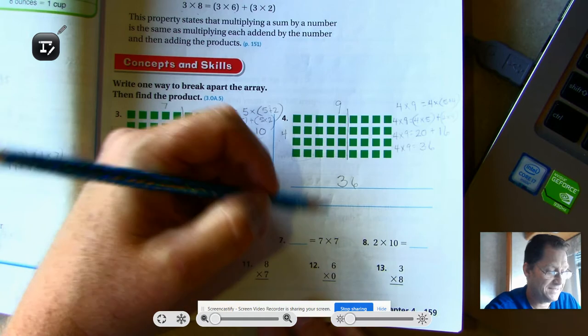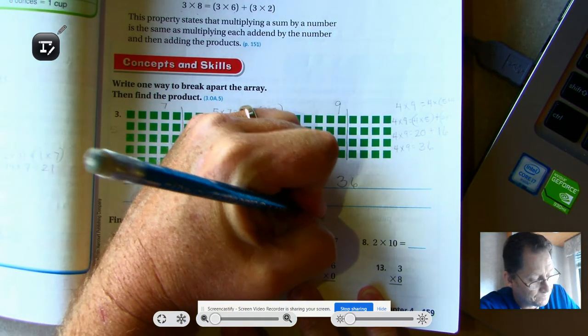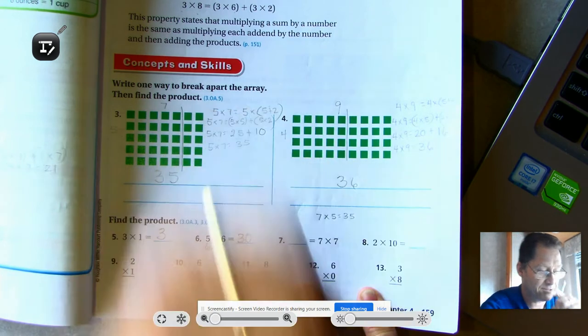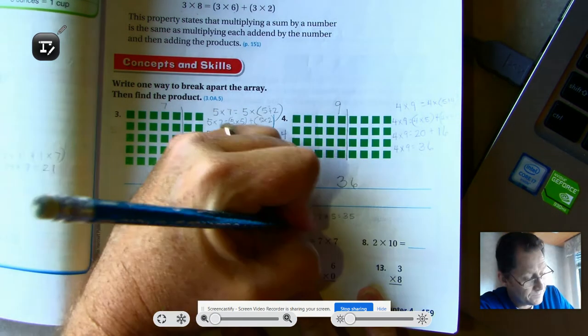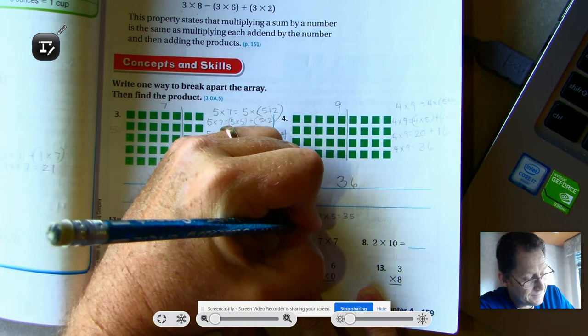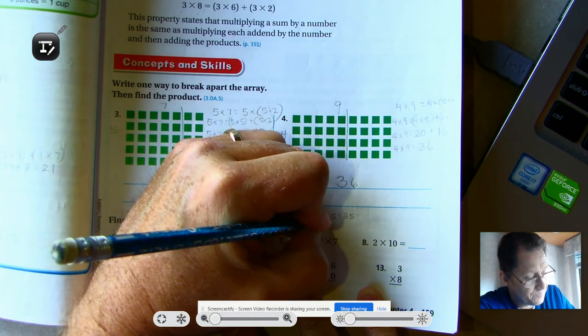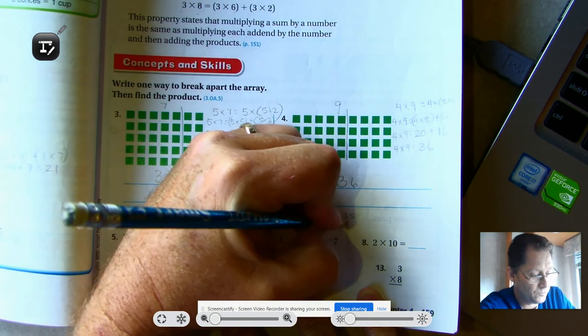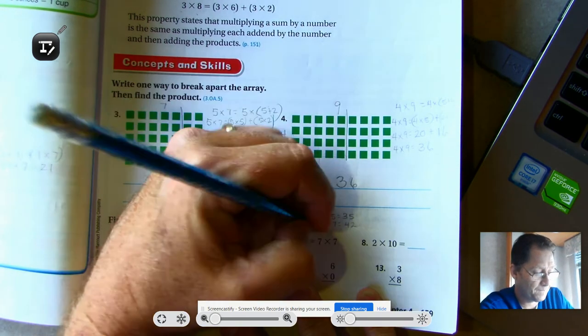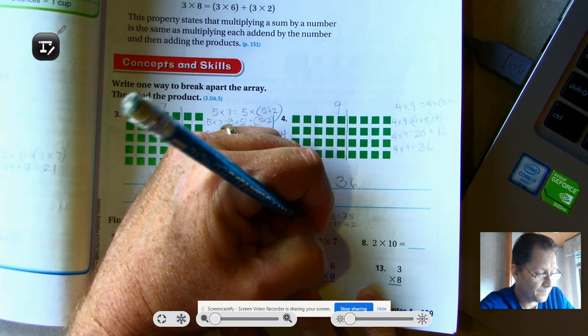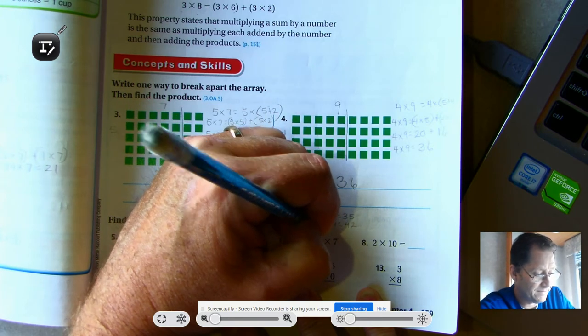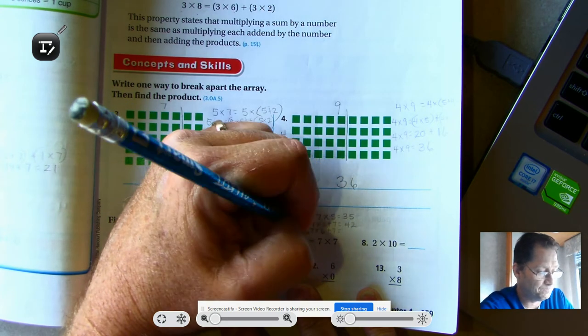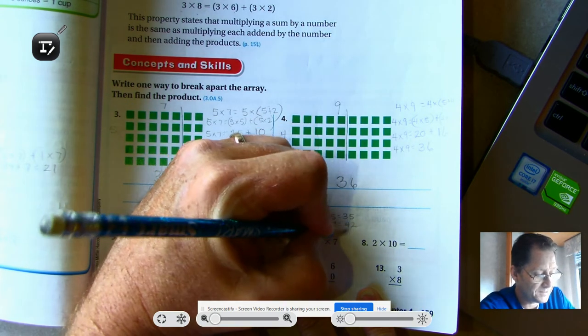Seven times seven. Well, I know that seven times five is 35. So I can go seven times five plus seven, which would give us 42. And I can go seven times six plus seven. 42 plus seven is 49.